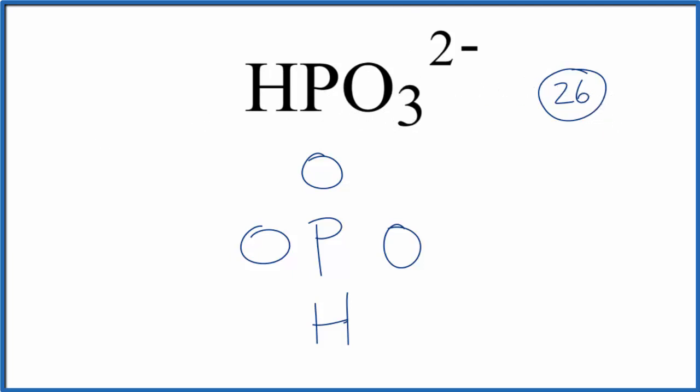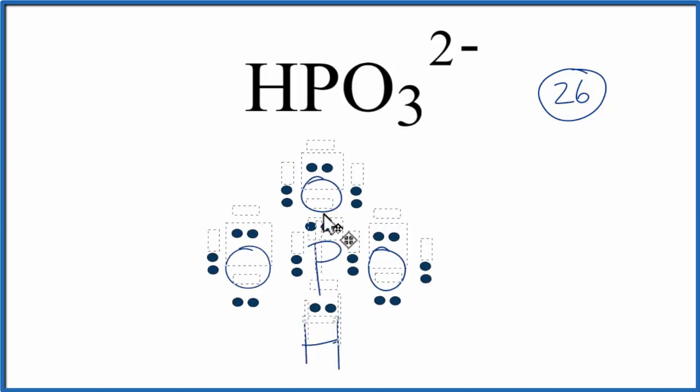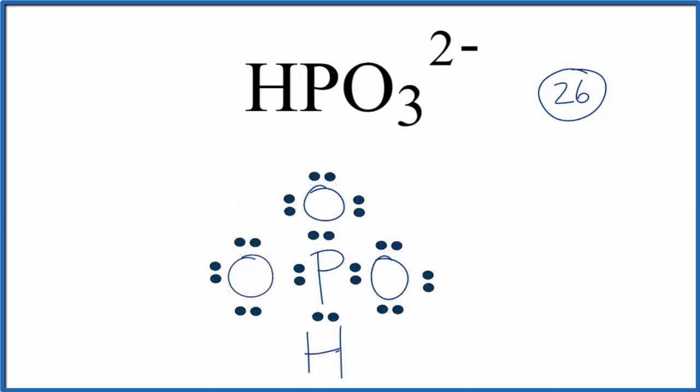If I put electrons between the atoms to form chemical bonds, it'll look like this. I've used 8, and then I'll put electrons around the outside here of each oxygen to complete the octets. And this seems like a Lewis structure. The oxygens have 8 valence electrons, the phosphorus has 8, the hydrogen only needs 2, it has 2, and we've used 26 valence electrons.